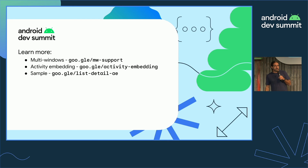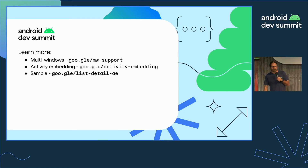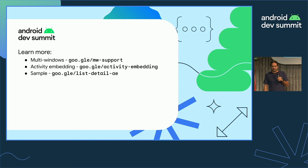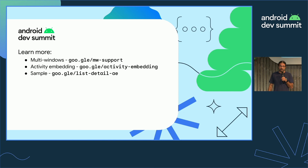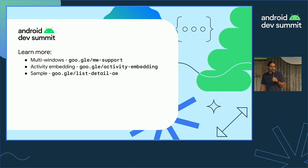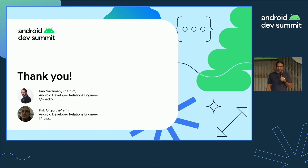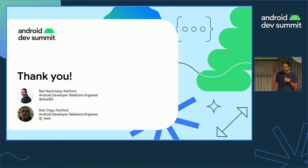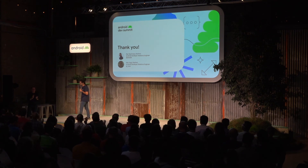If you want to learn more, please go to developer.android.com, where you can learn how to make your app multi-window compatible and how to implement activity embedding. We also encourage you to take a look at the source code of the fruit app we showed today. Thank you, and we hope you have a fruitful day!